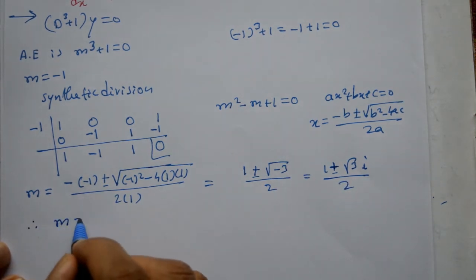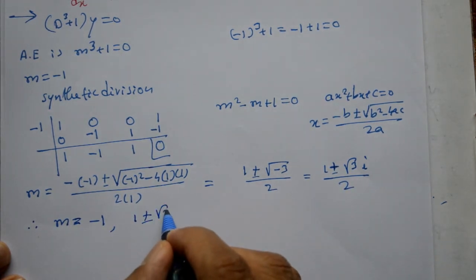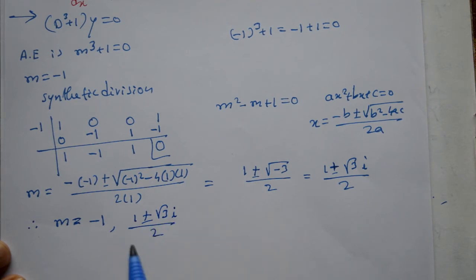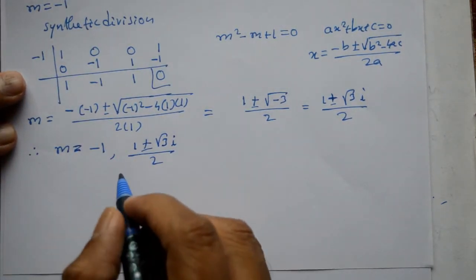Now, m is equal to we have roots are. 1 m is equal to kya hai? Minus 1 hai. Second and third root hai. 1 plus or minus root 3i divided by 2 hai. Hame yutus me general solution hika lienge. Complementary function use karke. Now, therefore,